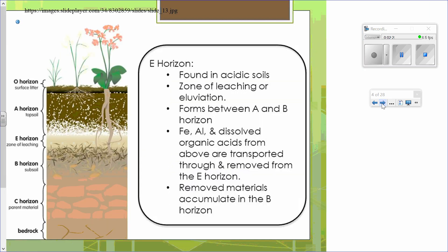Sometimes you may encounter an E horizon in a diagram. This E horizon is found between Horizon A and B in acidic soils, as a zone of leaching or eluviation. Iron, aluminum, and dissolved organic acids from above are transported through and removed from Horizon E, and those removed materials accumulate in the B horizon.